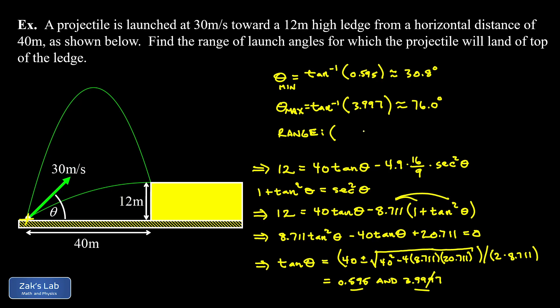So to properly state our answer here, we should probably write down an interval. So it's going to be 30.8 degrees to 76.0 degrees. And we put a nice box around it, and we're done.